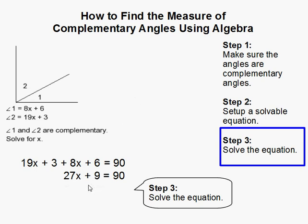So the first step here is adding like terms. So the 19x and the 8x makes 27x, 3 and the 6 makes 9. If we subtract 9 from both sides, we get 27x equals 81. If we divide both sides by 27, we get 3.